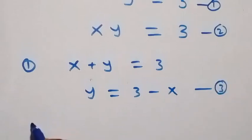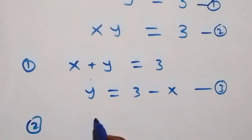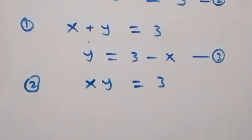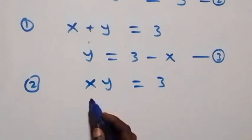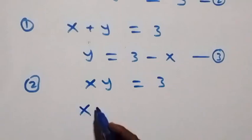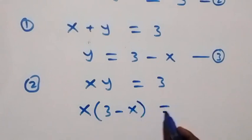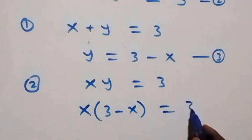From equation 2, we have x times y equals to 3. Let's substitute equation 3 into equation 2. That is, this becomes x multiplied by (3 minus x), then equals to 3.